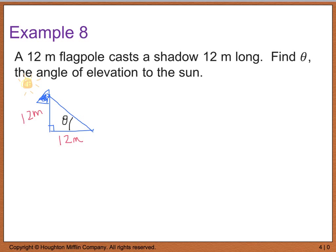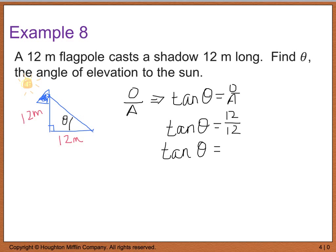So, again, I'm going to look at what I'm given in relation to my angle theta. I see that I'm given an opposite side and an adjacent side. So I know that the trig function that deals with an opposite and an adjacent is tangent. So the tangent of theta is equal to the opposite over adjacent. Now, if I plug in the values that have been given to me, I have tan theta is equal to 12 meters divided by 12 meters, or tan theta equals 1.